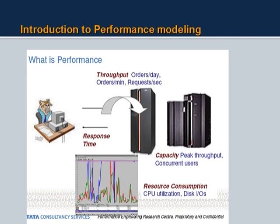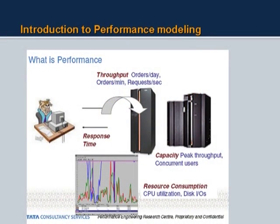In the context of computer system performance, additional terms include capacity and resource consumption. Capacity is measured in terms of peak throughput and concurrent users — how many concurrent users the system can support. A system designed for 2,000 users will crash if you put 10,000 on it. Sometimes adding hardware helps; sometimes it makes no difference. Capacity planning also involves peak throughput — for example, if 70% of daily transactions occur between 10am and 12pm, that defines your peak throughput requirement.